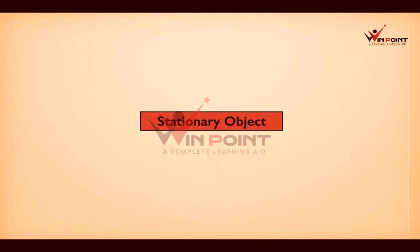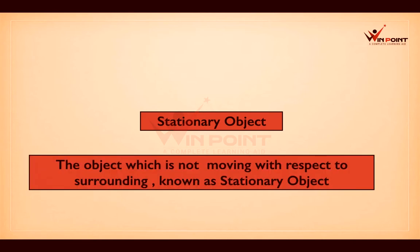A stationary object means an object which is not moving. If an object is at rest — if an object is not moving with respect to the surrounding — then we can say that it is a stationary object. The object which is not moving with respect to its surroundings is known as a stationary object.